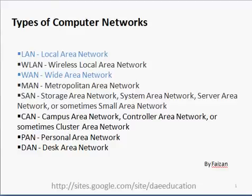SAN is the storage device connection — it connects servers with storage devices. CAN is the campus area network — a small LAN combination within one campus or one building, which is the same type of LAN you can find in a campus.